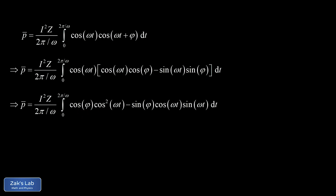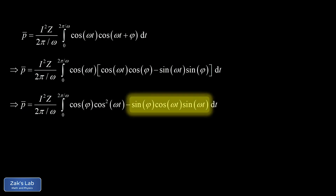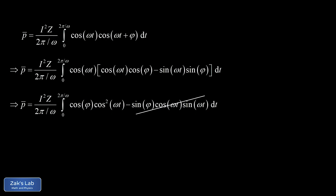Looking at the sine term: sin φ is just a constant, and we have a product cos(ωt)·sin(ωt). Using the identity sin(2x) = 2·sin x·cos x, this is proportional to sin(2ωt) — a sinusoidal function with a midline of zero. Integrating over two full periods of this function gives zero by symmetry, so that entire term vanishes.